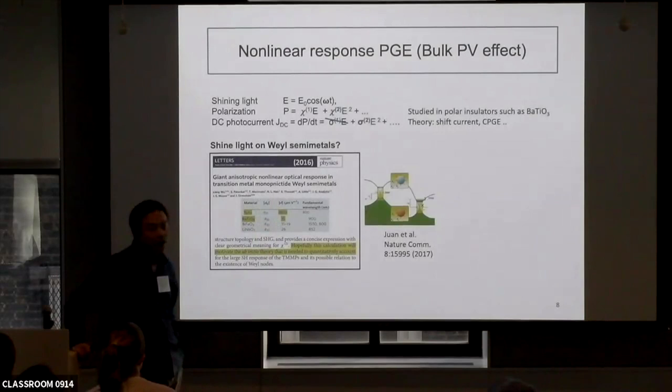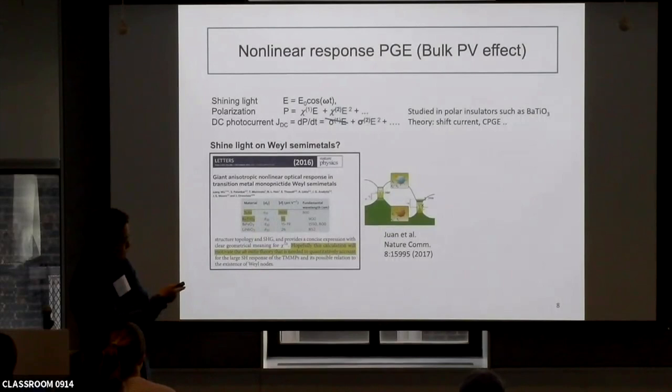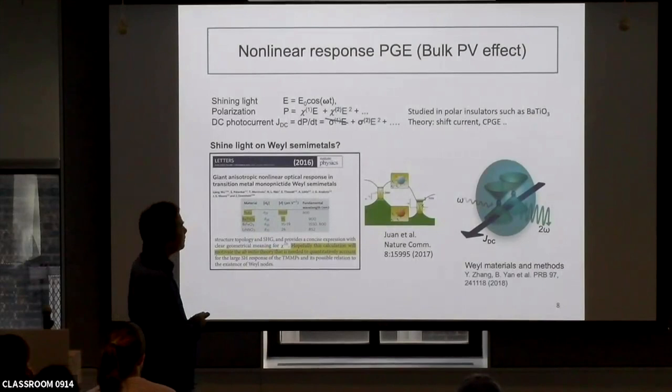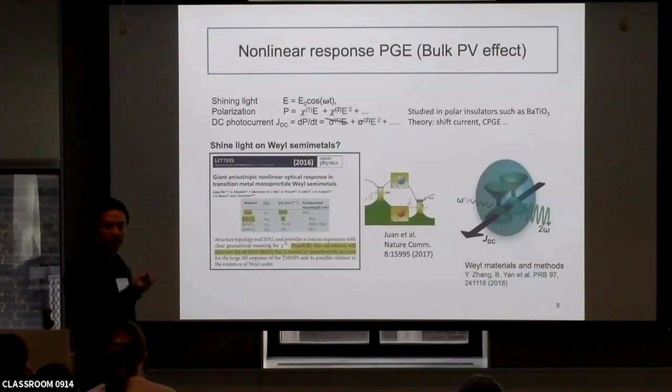In recent years — and this is the workshop organizer's work — it was found that TaAs, the first Weyl semimetal, has a non-linear response. Its chi-2 part is one hundred to three hundred times larger than ordinary materials. There are also beautiful proposals about quantized photocurrent. So far, our interest has been mainly focused on non-magnetic materials. But as the spin Hall case motivates us: if it becomes magnetic, something may be different.